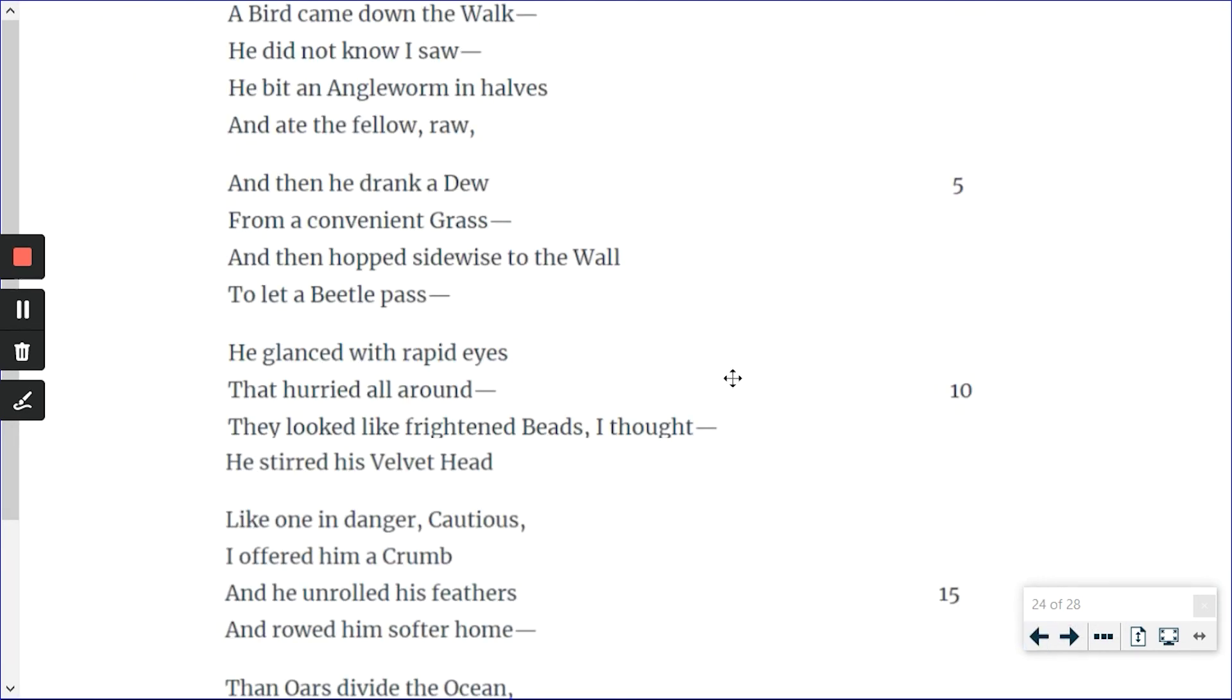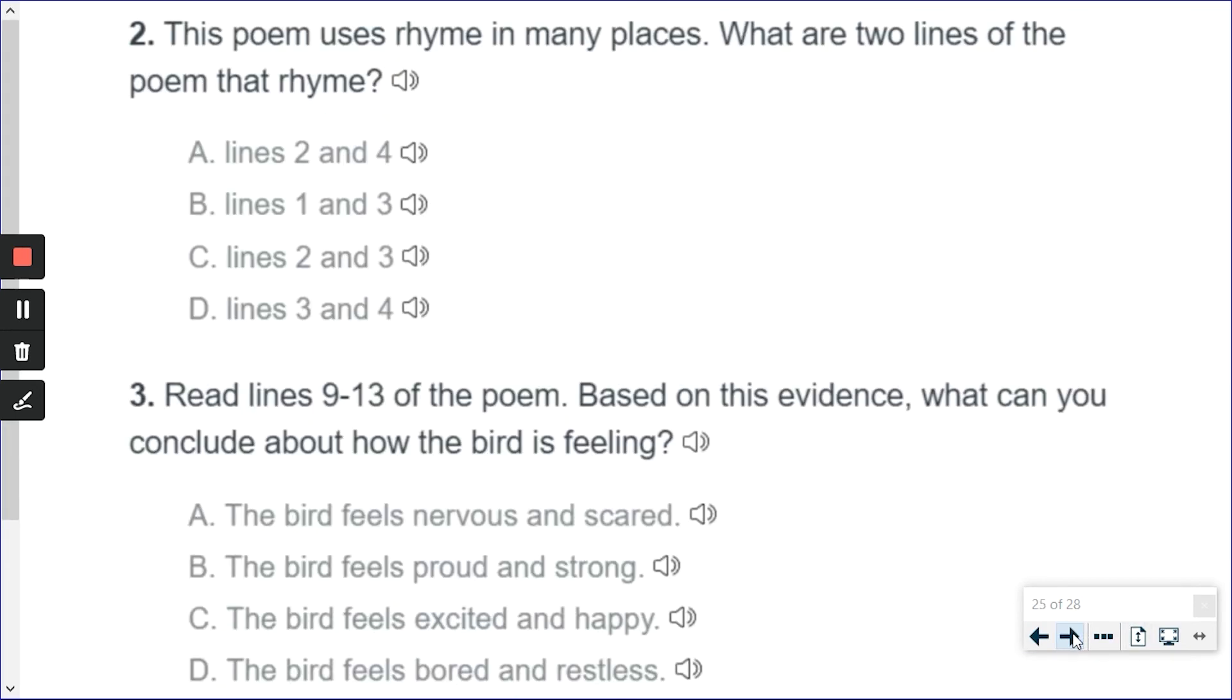9 and 10. He glanced with rapid eyes that hurried all around. Possibly. Now, this is 15, 16, 17. Then oars divide the ocean. No. The question asks you, when did he first suspect that someone was watching him? And I'm going to say that the answer is lines 9 and 10.